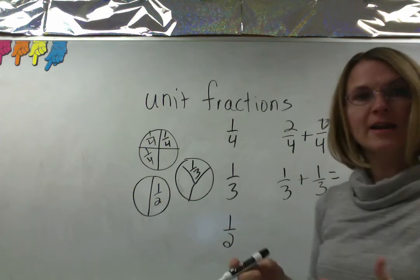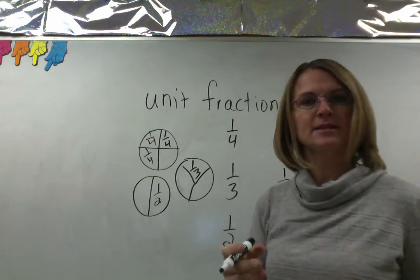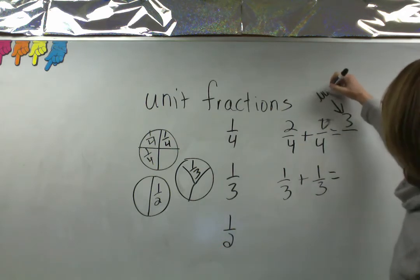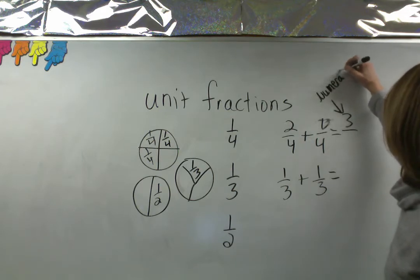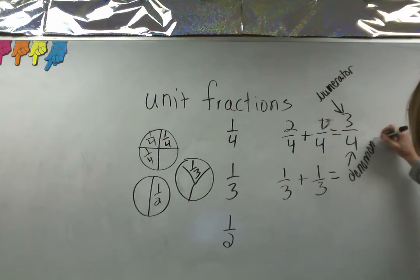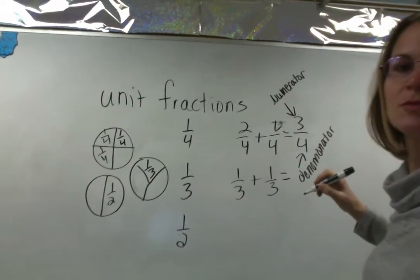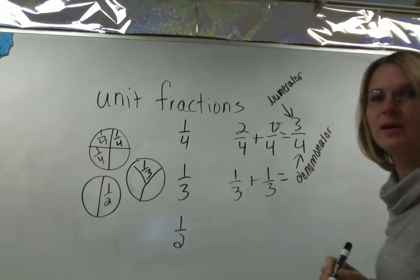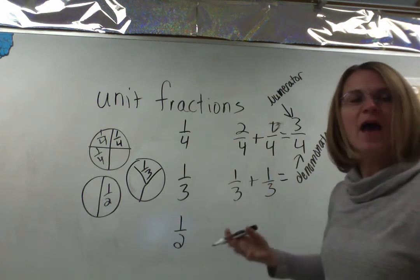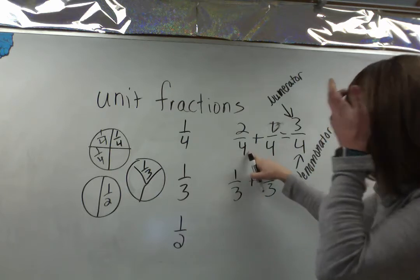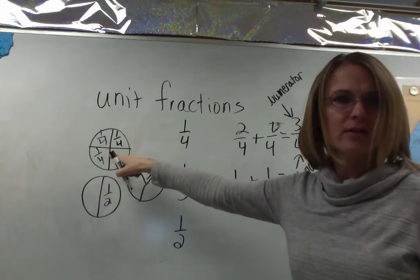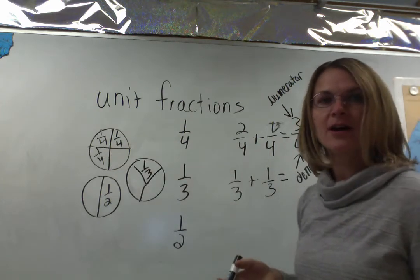Remember when you're adding fractions, you're adding how many of those size pieces you have. You add what we call the numerator, which is the top number. The denominator, which is the bottom number, stays the same. You add the top and the denominator stays the same because you're adding how many fourths you have. You can't change the denominator when you're adding fractions.